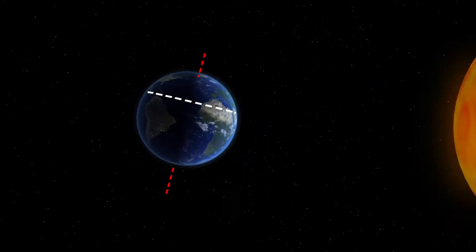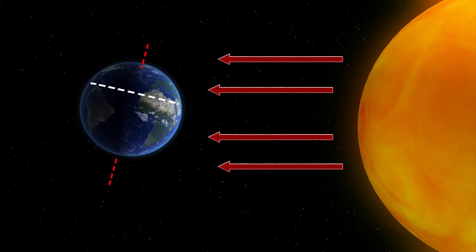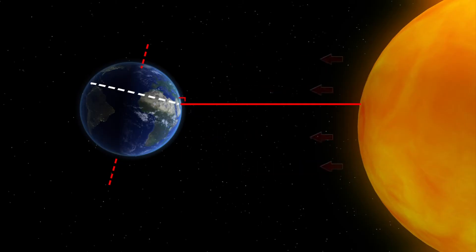During the solstice on June 21, the North Pole is tilted toward the Sun, allowing it to shine at a 90-degree angle on the Tropic of Cancer.